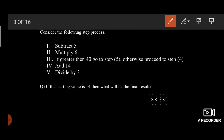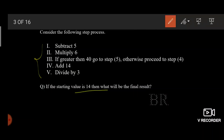Consider the following step process. I just want to read the question and go with the flow. If the starting value is 14, then what will be the final result? 14 minus 5 equals 9. 9 into 6 equals 54. As 54 is greater than 40, I am going with step 5: 54 divided by 3 gives me 18.